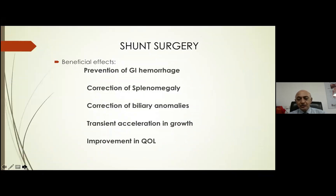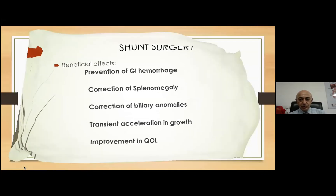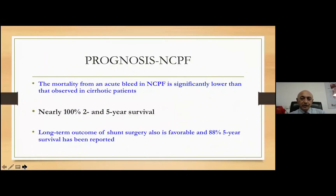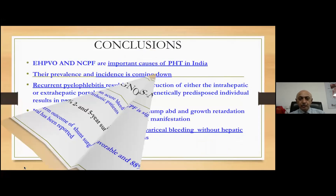In a country like ours, where patients with repeated variceal bleeding from semi-urban or rural areas may not have access to good quality endotherapy, shunt surgery at least in NCPF may be the treatment of choice — not only for prevention of hemorrhage but also for taking care of splenomegaly, correction of biliary abnormalities, and acceleration of growth in children. Prognosis is very good: five-year survival in NCPF is almost 100%, which is unheard of in patients bleeding from cirrhosis. After shunt surgery, there is 88% five-year patency of the shunt with routine use of anticoagulants.